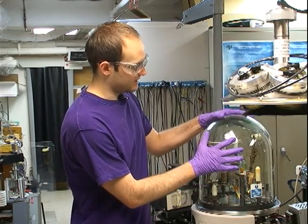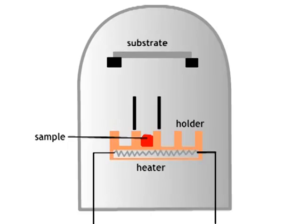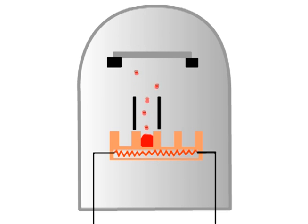Everything takes place underneath this bell jar where the pressure becomes extremely low. Then as the temperature increases, it'll turn straight into a vapor before melting or decomposing and go in an even thickness onto your substrate.